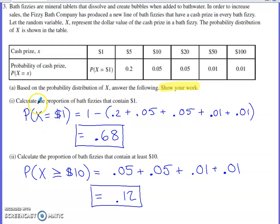This first part of part A says calculate the proportion of bath fizzies that contain $1. What we would hopefully realize is that all of the probabilities across this bottom row are going to have to sum to 1. One of these things has to happen. So adding all of those probabilities together has to give us 1, meaning if I start with 1 and subtract off the total of all of these others, that's going to give me the probability of getting that $1 cash prize. If you do that, you end up with 0.68.